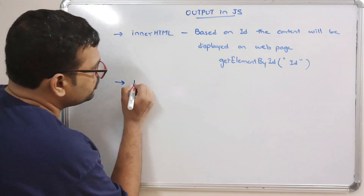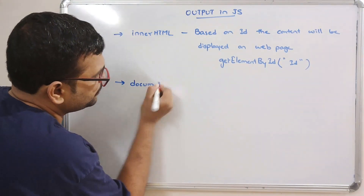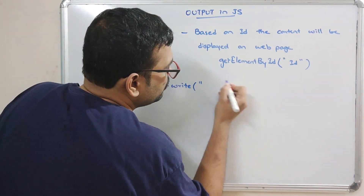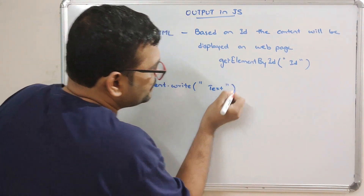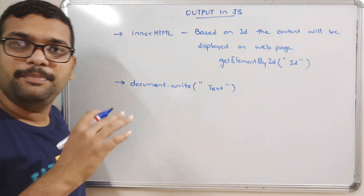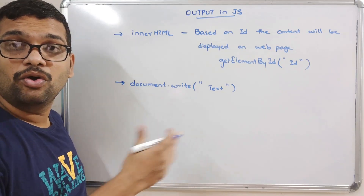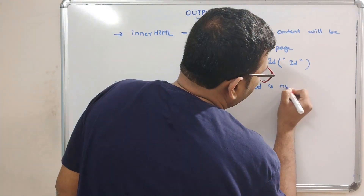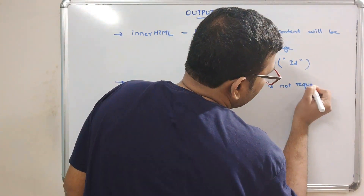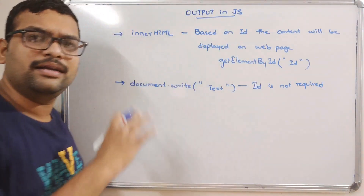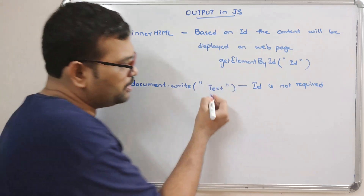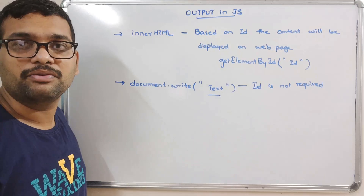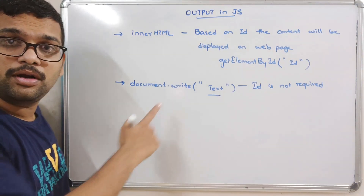The second one is document.write. With the document.write function, whatever text we write here will be printed on the web page directly — we need not use an id. The content will be displayed directly on the web page. Whatever we write inside the double quotes will be displayed directly on the web page.